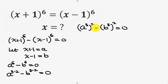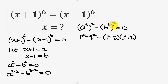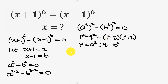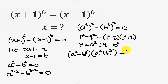Now we have an expression in difference of two squares. Recall that p² minus q² can be expressed as (p−q)(p+q). Comparing, our p is a³ and our q is b³. So this expression becomes (a³ − b³)(a³ + b³) equal to 0.